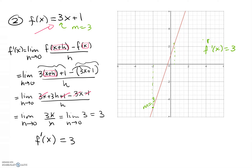In other words, no matter where I go on the graph — whether I'm at 0, 2, 4, or negative 4 — the derivative is always going to be 3. So if I were to graph the original function against its derivative, the original function is a line with a slope of 3, and its derivative is just the constant function f prime of x equal to 3, because at every single point I always have a y value of 3 for my derivative.